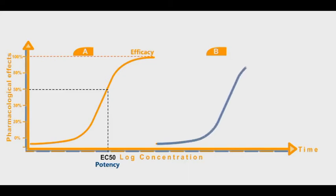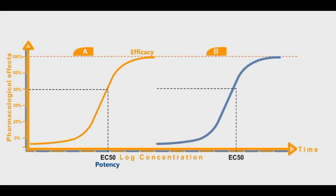As we can see in this graph, drug A has a similar maximal pharmacological effect to drug B. Therefore, drugs A and B have the same efficacy. However, the EC50 of drug A is smaller than that of drug B, meaning drug A has higher potency than drug B. This means that a lower concentration of drug A is needed to achieve the same pharmacological response as drug B.